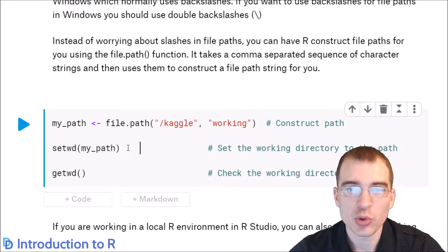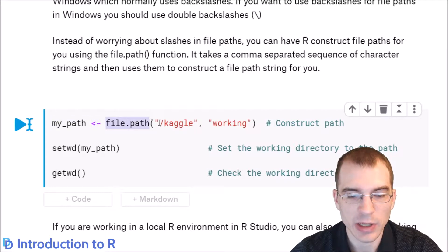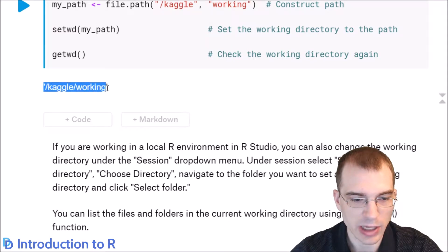You can create a new file path with the file.path function. It takes a comma-separated sequence of character strings that are the different folders to the file path you want. We're constructing a path back to that Kaggle working directory. We're setting it back to this my path, and we'll check it again to make sure that we are back in the working directory. So it says we are back in Kaggle working.